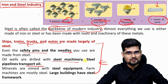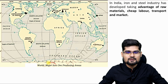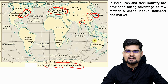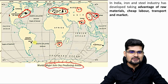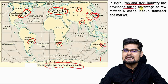That's why iron and steel industry becomes really the backbone of manufacturing industries across the world. The major iron ore producing areas in the world will definitely lead in steel production as well. If you see the commercial hubs — these are iron ore producing areas from Russia to the US to India to Southeast Asia, also in South Africa, Brazil and Australia. In India, iron and steel industry has developed taking advantage of raw materials, cheap labor, transport and market.